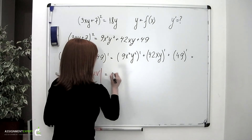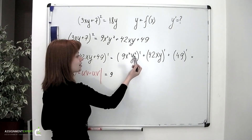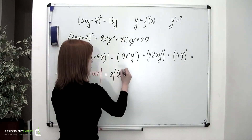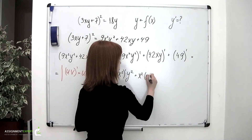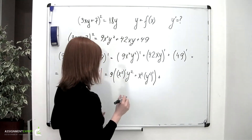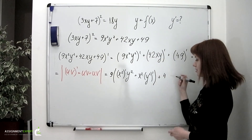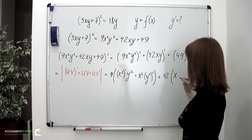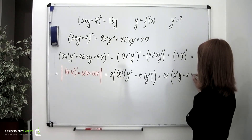We can pull 9 out front and find the derivative of the product of x squared and y squared. According to the product rule, this gives 9 times the quantity x squared prime times y squared plus x squared times y squared prime. Again using this formula for the second term, pulling 42 out front, we have 42 multiplied by the sum of x prime times y plus x times y prime.